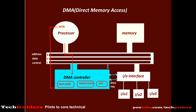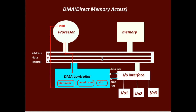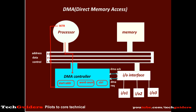Having programmed the DMA controller, the CPU can continue with its work. By that time, the DMA controller communicates with the I/O device and gets ready with the data to be transferred. Having the data ready, the DMA controller will request control over the bus from the processor by raising a bus request signal or a hold signal.